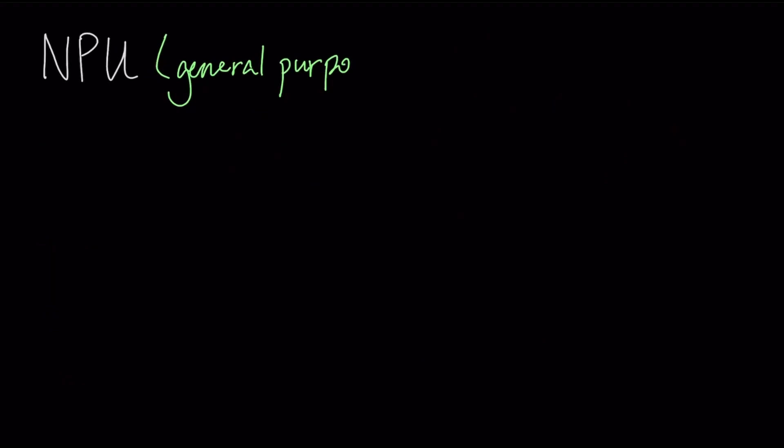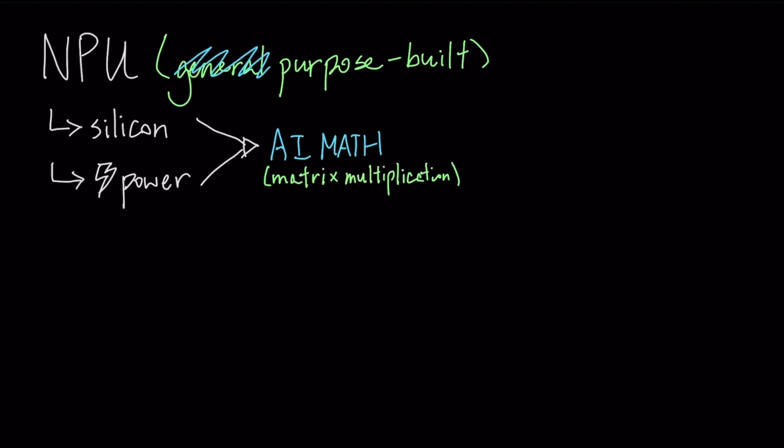An NPU, by contrast, sheds this generality. It's a purpose-built accelerator that dedicates its silicon and power budget almost exclusively to the core mathematical functions of AI, like matrix multiplication, resulting in orders of magnitude improvements in speed and power efficiency for those specific tasks.